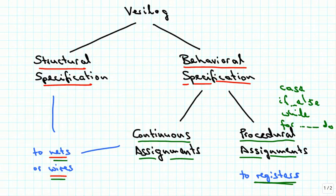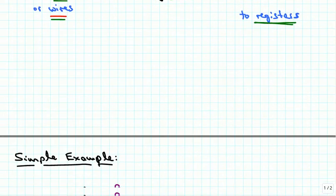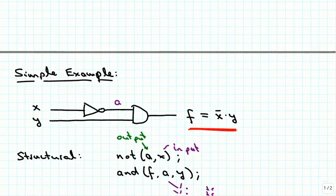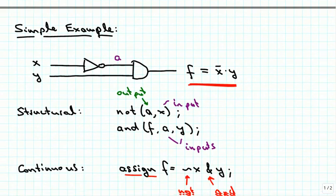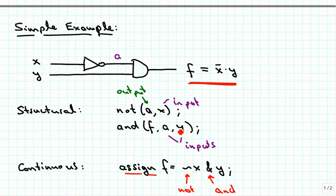In the first part of this introduction we were looking at the structural specification of a very simple circuit — x NOT ANDed with y. Here is the circuit that we were implementing, and the structural description just had a NOT gate and an AND gate in it.